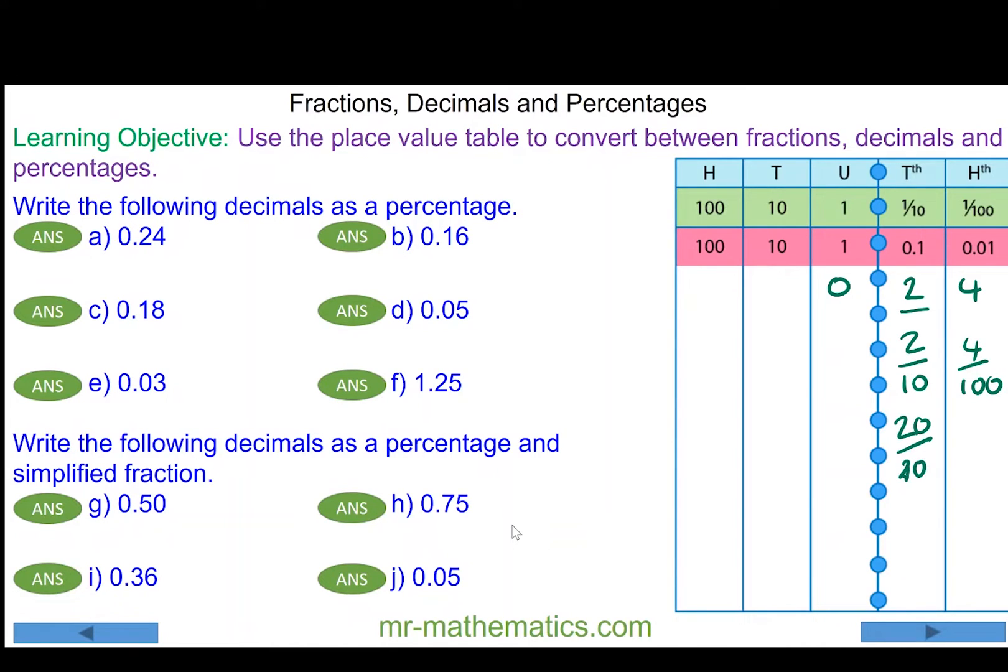But two tenths can also be written as twenty hundredths when we multiply both by ten. Adding that to the four hundredths, we have twenty-four hundredths, and percent means as a fraction out of one hundred, so we have twenty-four percent.